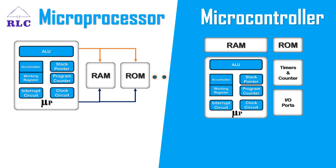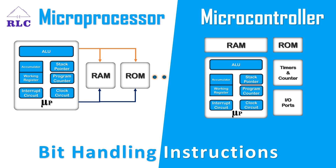Next, we'll see the bit handling capacity. Data stored and processed in the ALU is in digital form, meaning it consists of bits. The number of bit-handling instructions available in a microprocessor is very few compared to a microcontroller. We will study the instruction sets of the microcontroller in future videos.